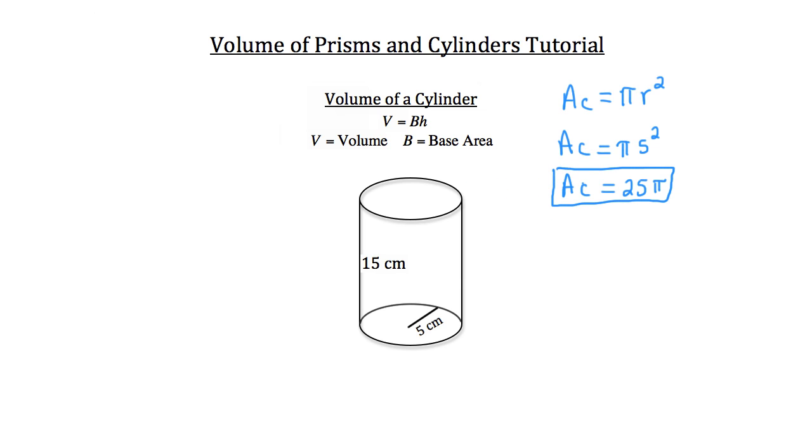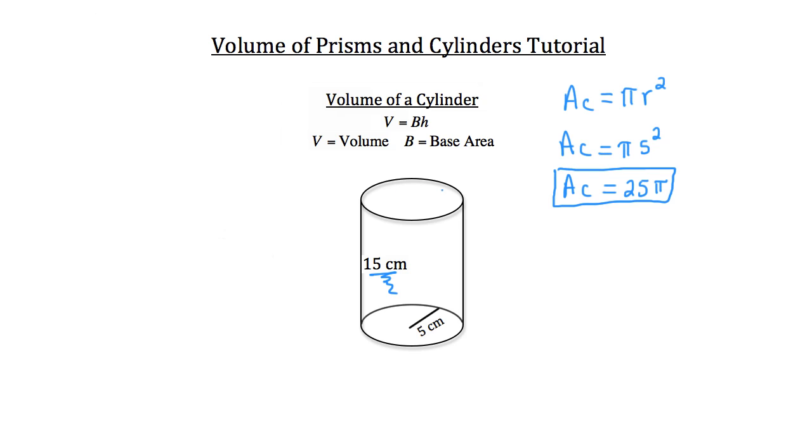So now that we know the area of our base, we want to multiply by the height of our cylinder. And in that case, it's going to be 15 centimeters for this cylinder. So now that we know the area of the base of our cylinder, we can multiply by the height, 15 centimeters, to solve for the volume of this cylinder.